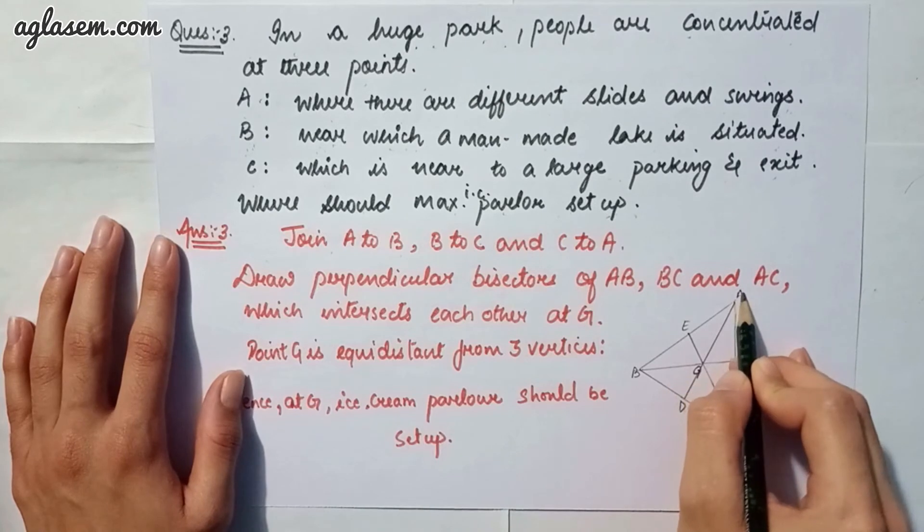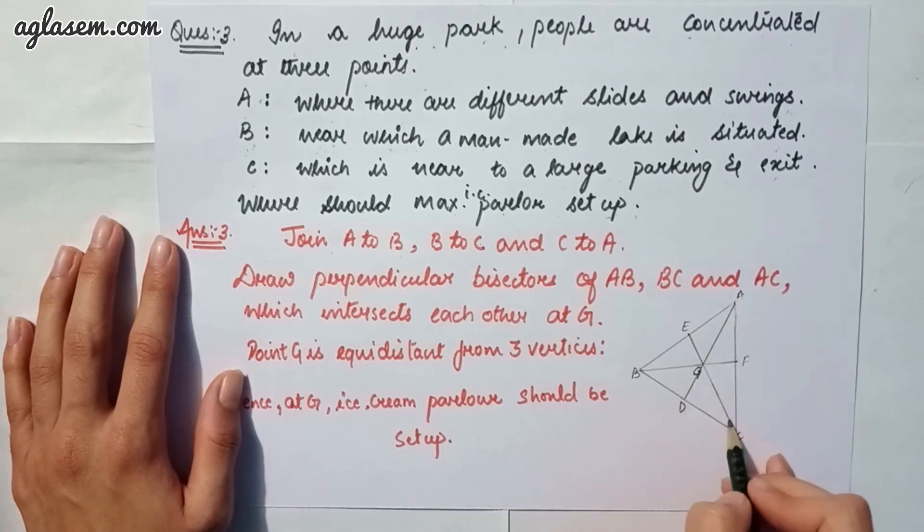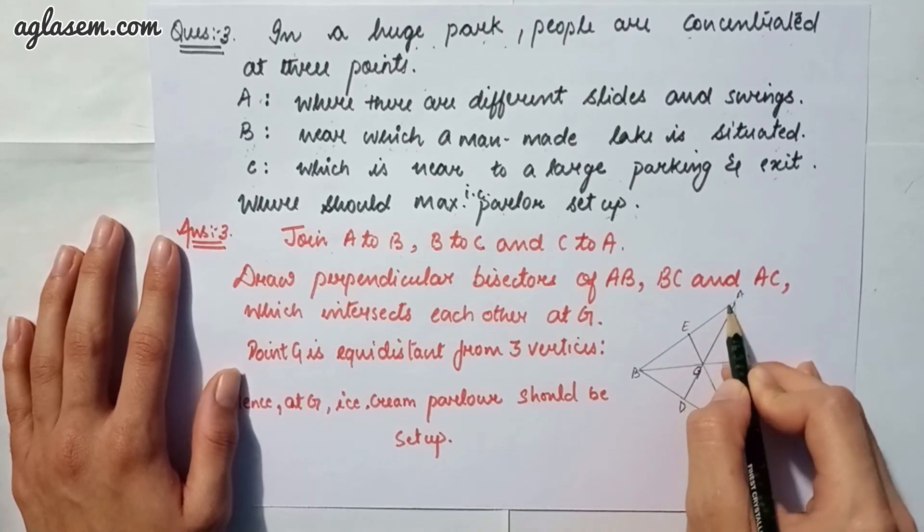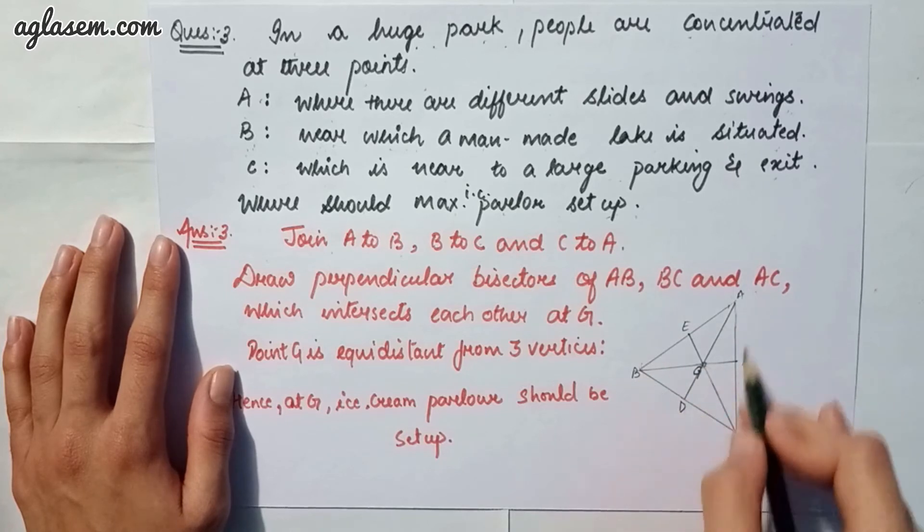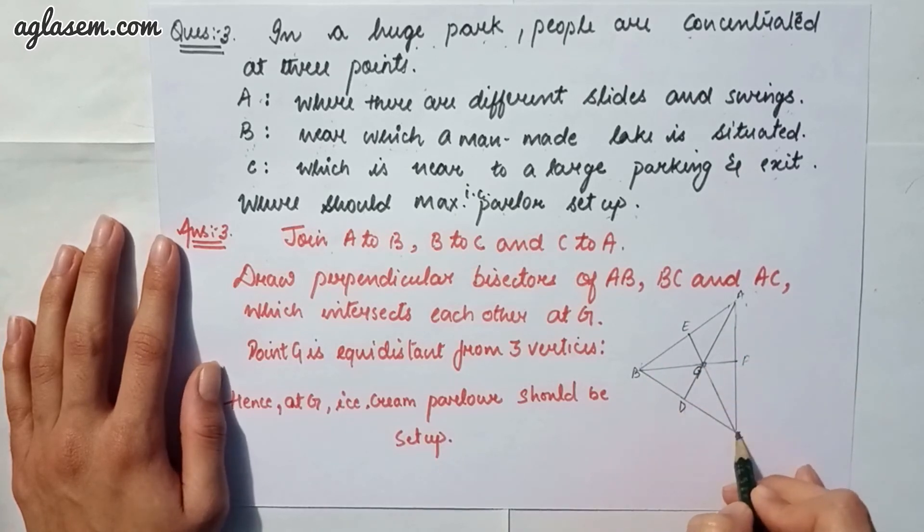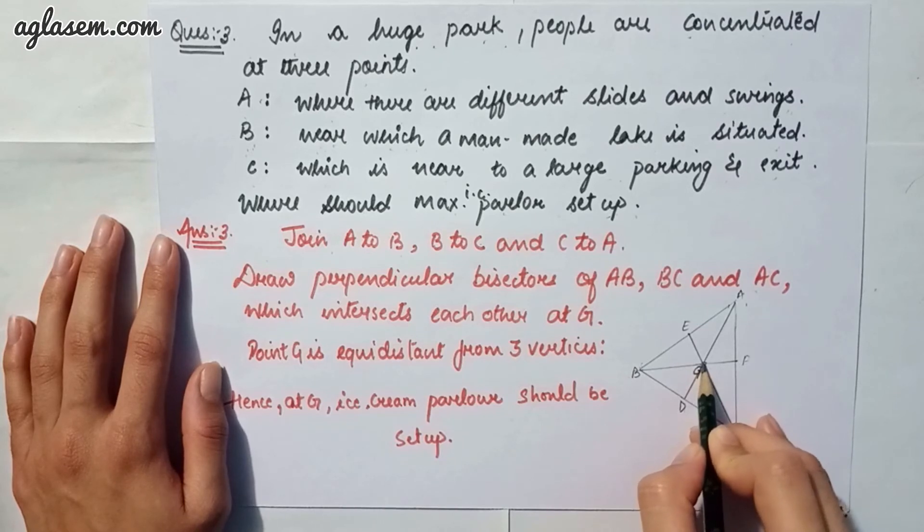Now we have to draw a perpendicular bisector of AB, BC and AC which intersect at point G in the middle. So point G is equidistant from the three vertices. Therefore at G the ice cream parlor should be set up.